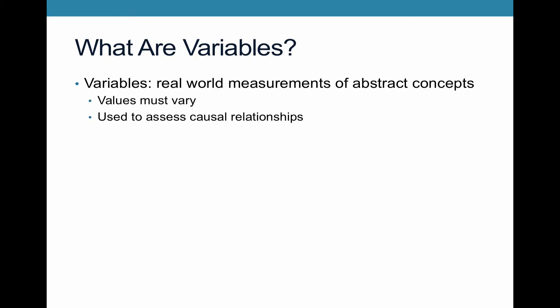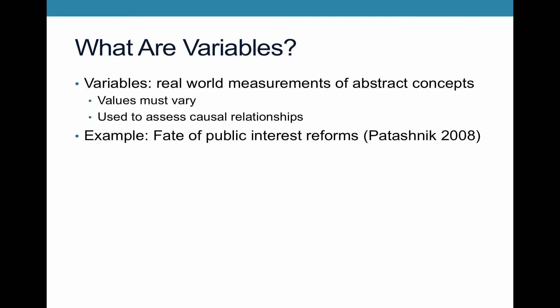Variables must vary — hence the name variables — and we use them when we're assessing causal relationships, asking why relationships. This is how we say that one thing causes another thing, and those two things are two variables.